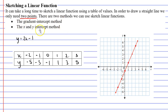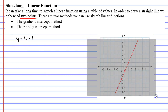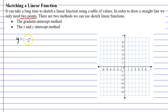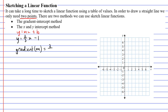Here are two methods we can use to sketch a graph — both involve finding 2 points first and then drawing your straight line. We'll start by talking about the gradient intercept method. Looking at our equation, we can see that m is 2 over 3, so our gradient is 2 over 3.